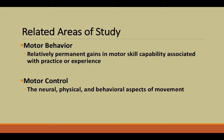Some related areas of study that contribute to motor development are motor behavior and motor control. Motor behavior is defined as relatively permanent gains in motor skill capability associated with practice or experience. Motor control encompasses the neural, physical, and behavioral aspects of movement. Motor development, then, is how our motor behavior and motor control change across a lifespan.